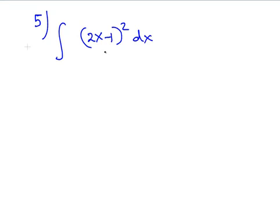And again, we have a relatively simple expression in x and we just have to square it. So, let's work that out. We get integral of 4x² minus 4x plus 1 dx.